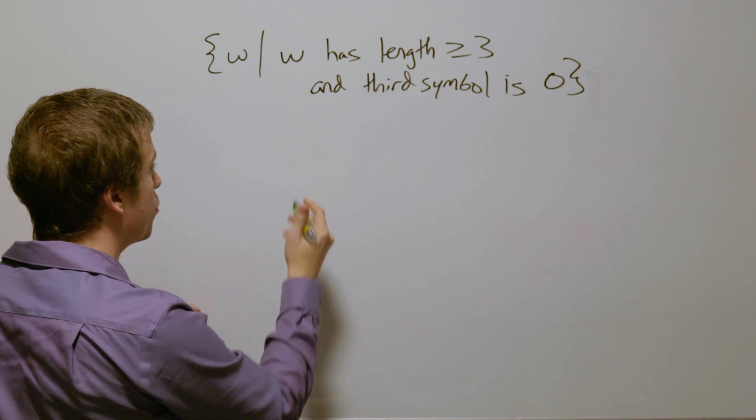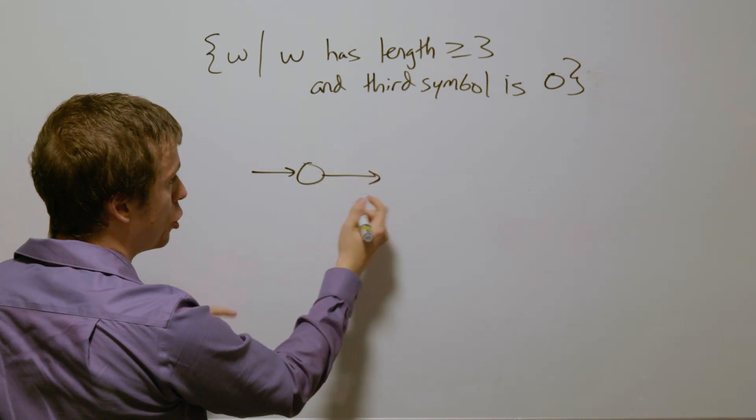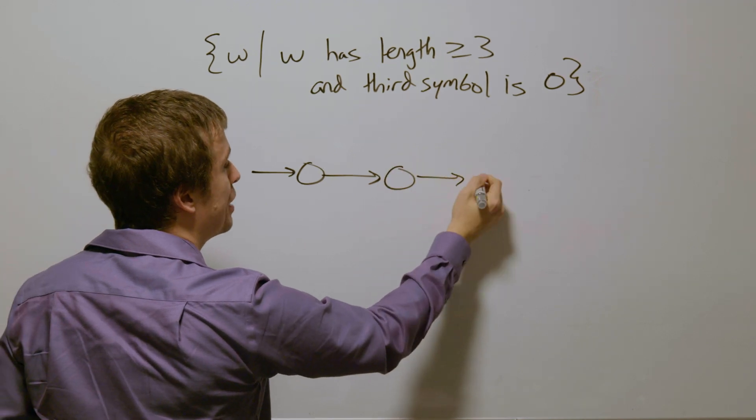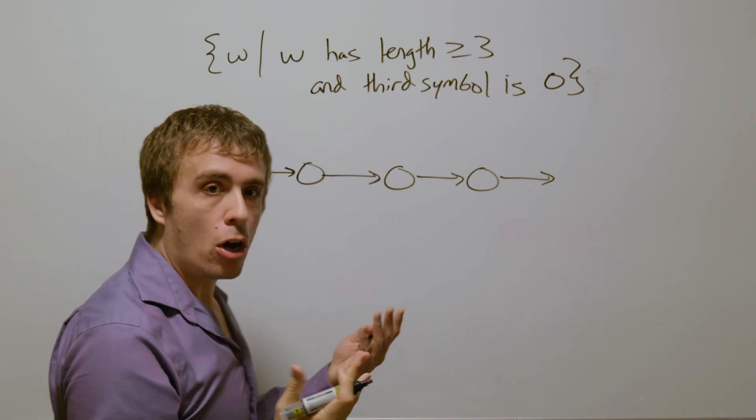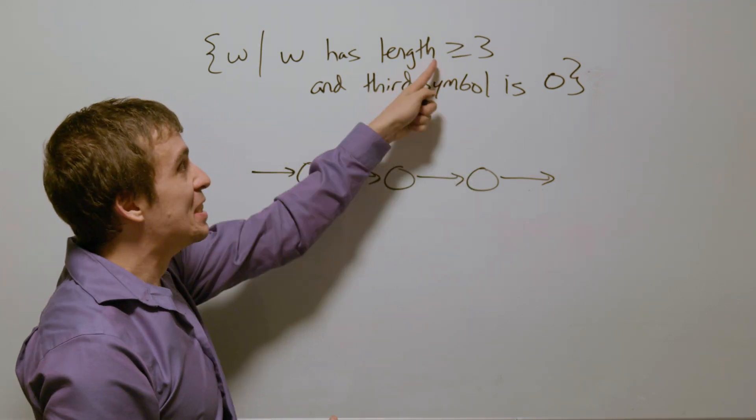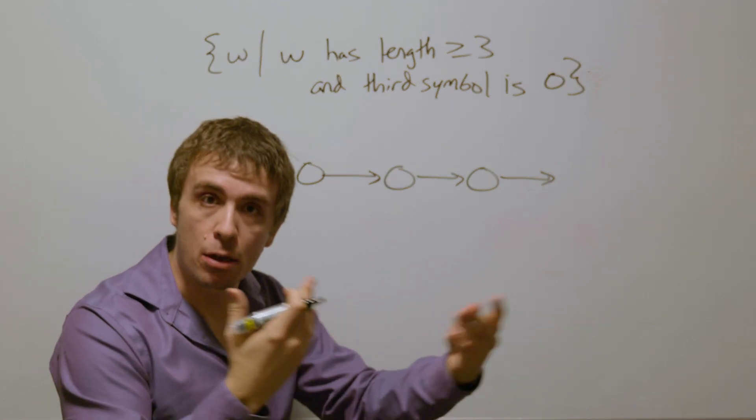To have length at least three, I need to have a transition here, then another transition, then another transition at the very minimum. And there clearly are strings that have length exactly three and have third symbol zero, namely triple zeros.